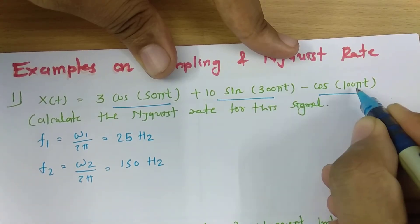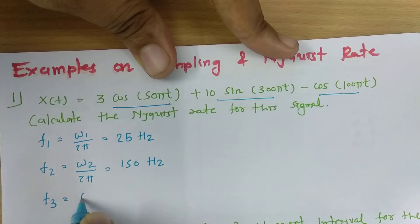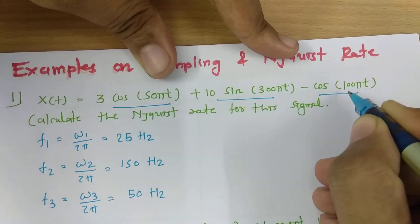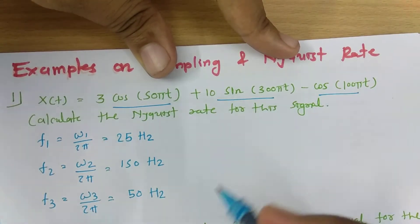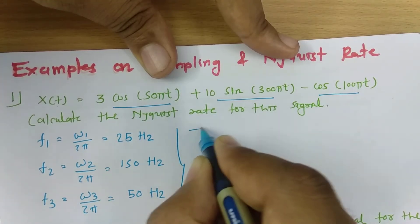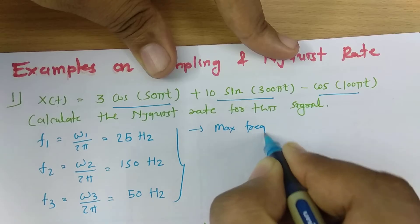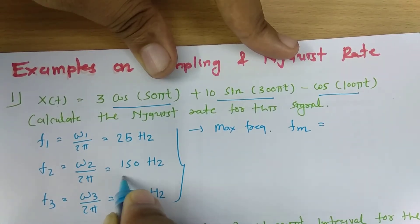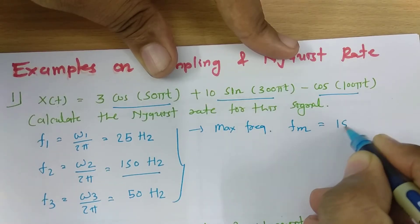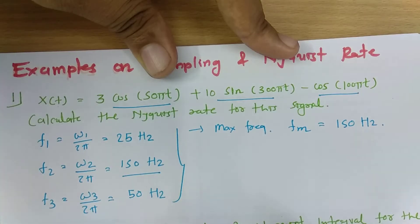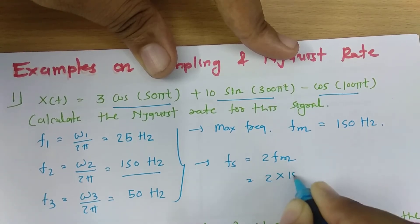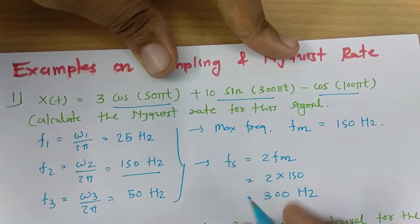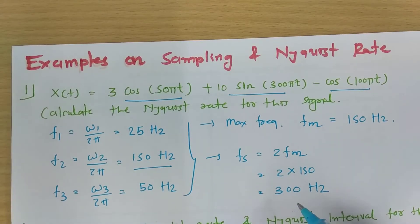The third frequency component is ω₃ = 100π, so f₃ = ω₃ / 2π = 50 Hz. The maximum frequency out of these three is fₘ = 150 Hz. Therefore, the Nyquist rate is fₛ = 2fₘ = 2 × 150 = 300 Hz.